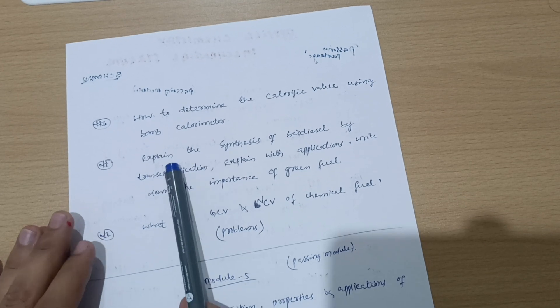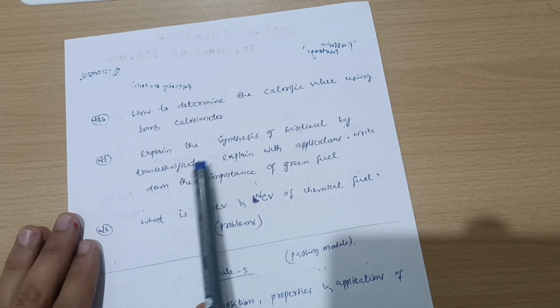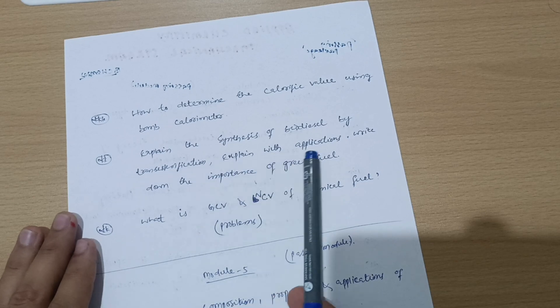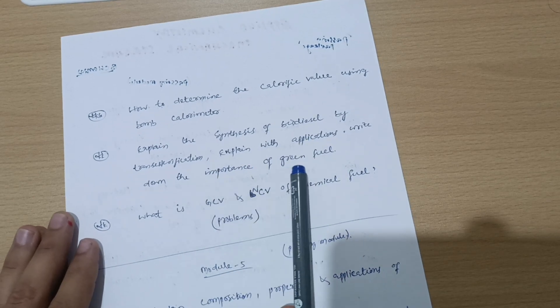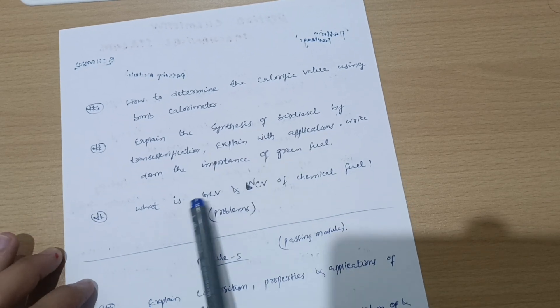Next is how to determine the calorific value using bomb calorimeter. This is super important. And next is explain the synthesis of biodiesel by transesterification and its applications.